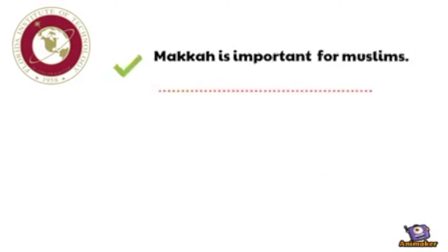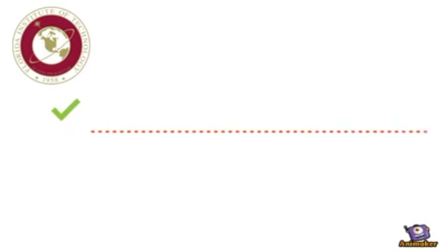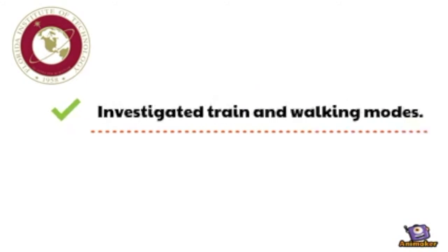Conclusion. To conclude this video, Makkah is an important city for Muslims around the world and 3.5 million visits it every year in a certain time. It is located in Saudi Arabia. To manage the crowd in Makkah and improve the transportation there, this video investigated the transportation modes in this city, especially train and walking.